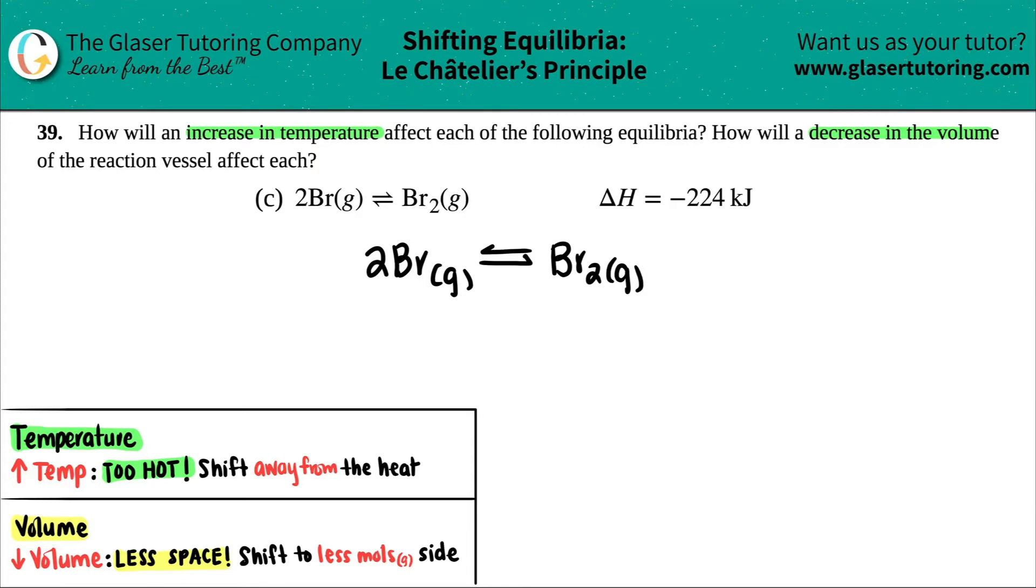Okay, now with Le Chatelier's principle, when we're manipulating things inside of a reaction vessel - temperature, volume, pressure, and concentration - the first thing I want to do is get this out of the way. They told me that it was a delta H value.